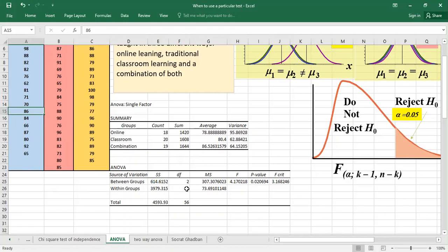Then we're having the degrees of freedom. As we said in this test we're having two degrees of freedom. The first one it's k-1 because we're having here three groups online classroom and combination, so it's three minus one it's two and the total number of data that we're having it's 57, so 18 plus 20 plus 19 minus k it's three so it's 54 and this is the second degree of freedom.